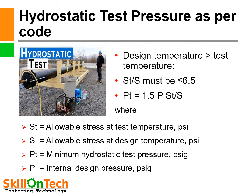You can see a picture where hydrostatic test of a pipeline is conducted. So how is hydrostatic test pressure calculated as per code? Test pressure formula: Pt = 1.5 × P × (St / S), where St is allowable stress at test temperature (Psi), S is allowable stress at design temperature (Psi), Pt is minimum hydrostatic test pressure (PsiG), and P is internal design pressure (PsiG). Design temperature should always be greater than test temperature, and St/S must be less than 6.5.